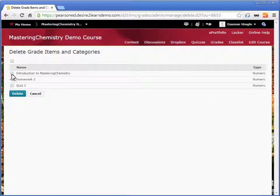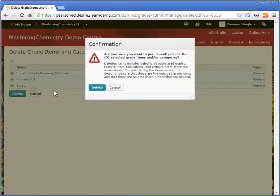Put a check mark next to each item you wish to remove from grades. You should remove all modified mastering assignments that came over during grade sync. Click delete. You will get a confirmation message. Click delete again.